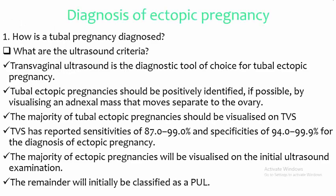Regarding the diagnosis of tubal ectopic pregnancy and the ultrasound criteria: transvaginal ultrasound is the diagnostic tool of choice. Tubal ectopic pregnancy should be positively identified, if possible, by visualizing an adnexal mass that moves separate to the ovary. The majority of tubal ectopic pregnancies should be visualized on transvaginal ultrasound, which has reported sensitivities of 87–99% and specificities of 94–99.9% for the diagnosis of ectopic pregnancy.